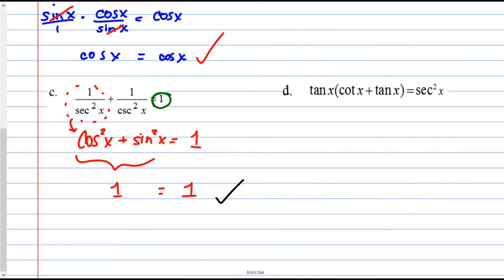Part D: tangent x times the quantity (cotangent x plus tangent x) equals secant squared x. I see a parenthesis with a term outside, so my instinct is to distribute. Tangent x times cotangent x, plus tangent times tangent, which is tangent squared. And we're still trying to make it equal secant squared x.